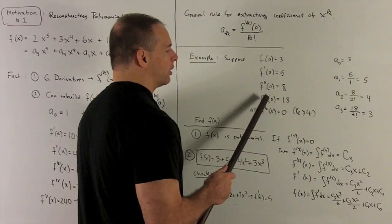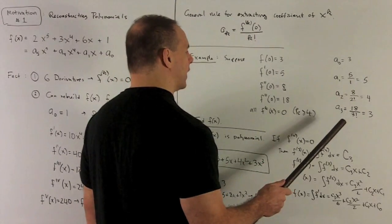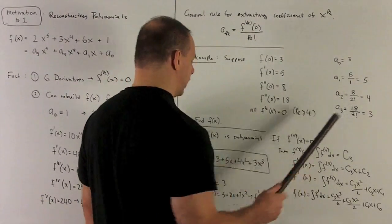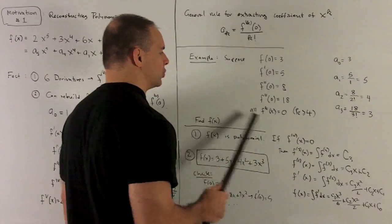And then third factorial, third derivative of 0, it's going to be 18. So I divide by 3 factorial. That gives me 6. So I'm going to get a 3. And then that is going to be the polynomial that goes with our situation here.